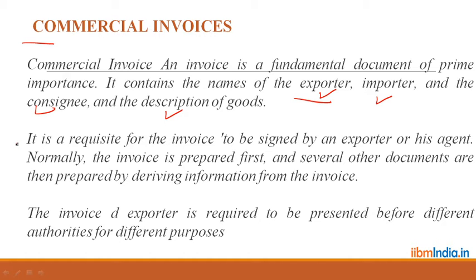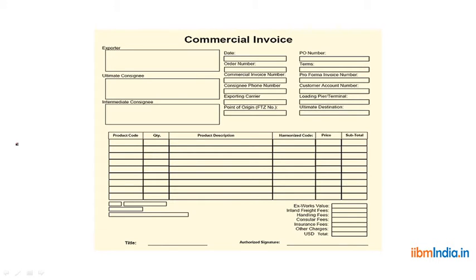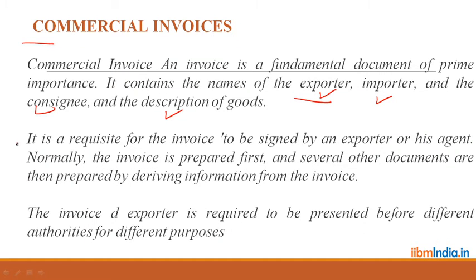The commercial invoice contains: the exporter's name, ultimate consignee, intermediate consignee, date, order number, commercial invoice number, consignee phone number, exporting carrier, point of origin, view number, purchase order, terms, pro forma invoice number, customer account number, loading terminal number, ultimate destination, product code, quantity, product description, harmonized code, price, and sub-total.